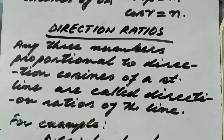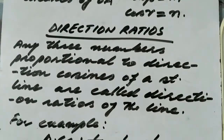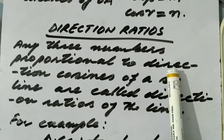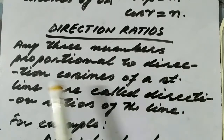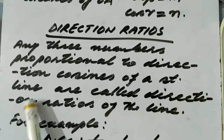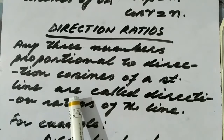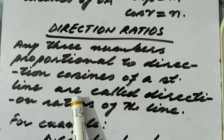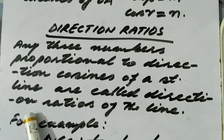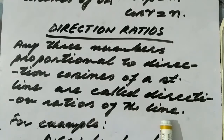Now let us talk about direction ratios, which is also a very important concept closely related to direction cosines. Direction ratios are three numbers proportional to the direction cosines of a straight line.